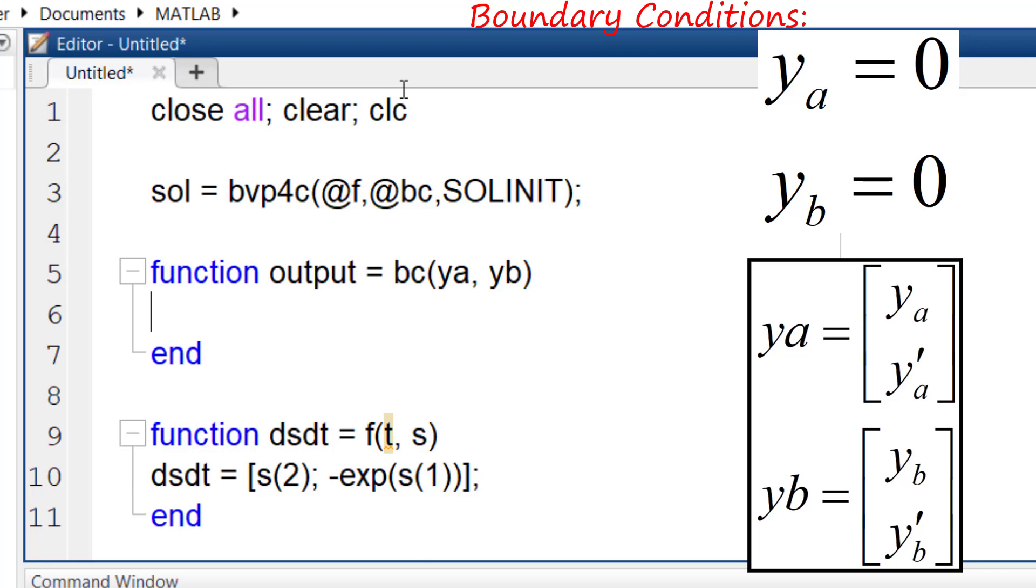Important note, when you want to write the boundary conditions, the right hand side must be 0. In our problem it is already satisfied. But we will see other situations in another problem. So our boundary values should be written like this. Output equal to the first argument of ya and the first argument of yb.